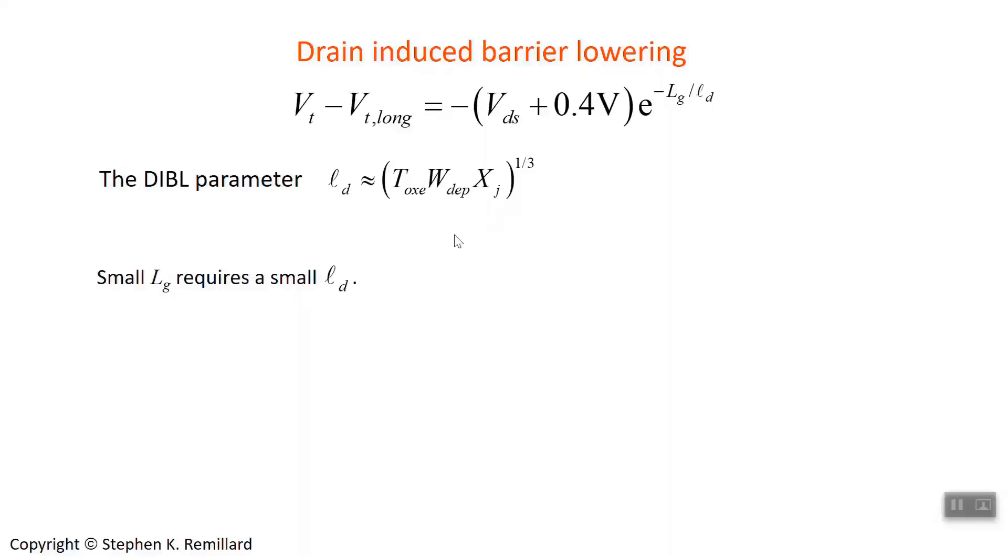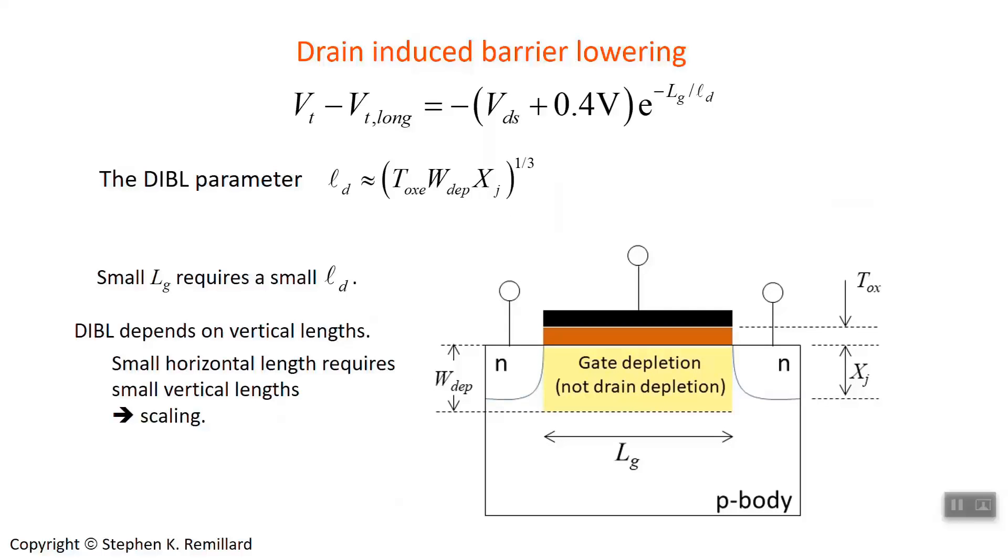Oxide thickness is something we're familiar with, and the depletion depth is something we're familiar with, but junction depth is a new dimension to think about. It's the depth of this n-type region in the drain. That's what X sub J is. Now you take the geometric mean of these three numbers, they each have dimensions of length, and you get a length. The gate length is a horizontal dimension, and these three lengths are vertical dimensions. So if you change this horizontal dimension, the expression for the DIBL parameter tells you how much the vertical dimensions need to change to prevent the threshold voltage from getting too suppressed. That's scaling in two dimensions, two-dimensional similitude.